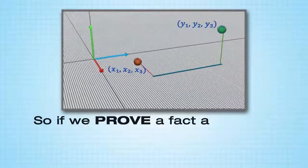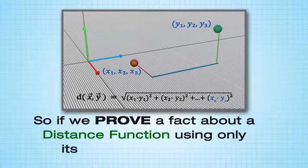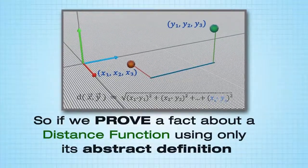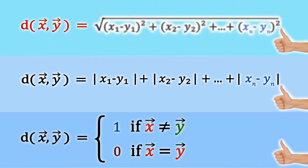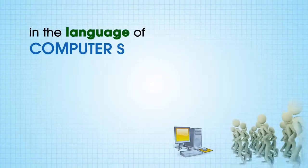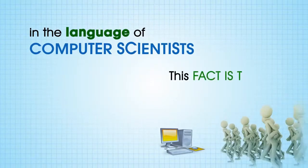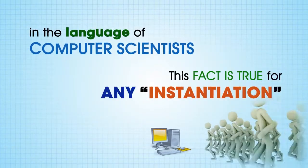So if we prove a fact about a distance function using only its abstract definition, then we immediately know that this fact is true for any particular distance function. Or in the language of computer scientists, this fact is true for any instantiation.